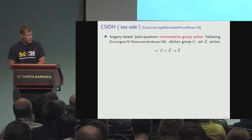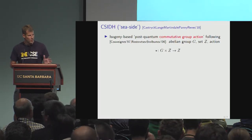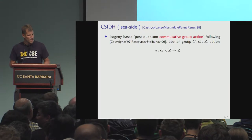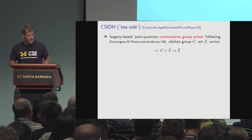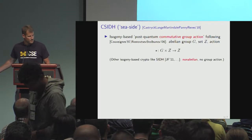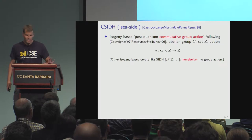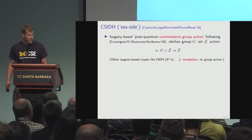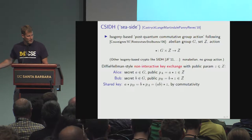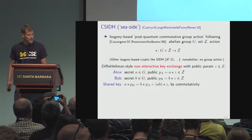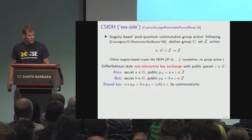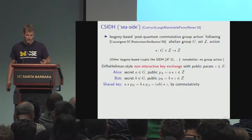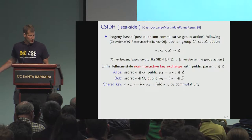Seaside was proposed at AsiaCrypt last year. It's an isogeny-based, so-called post-quantum commutative group action. It follows in the framework of Couveignes from 1997. The central object is a group action involving an abelian group G and a set Z, and the action takes an element from each of those and returns an element of Z. Note that this has nothing to do with other isogeny-based cryptography like SIDH, which uses non-abelian groups and doesn't involve a group action. The killer app for this group action is a Diffie-Hellman-style key exchange: you have a public parameter Z, each party chooses a secret group element, applies the group action with that element and Z, and that becomes their public key, and then they can each compute a common shared key in a very much Diffie-Hellman style.